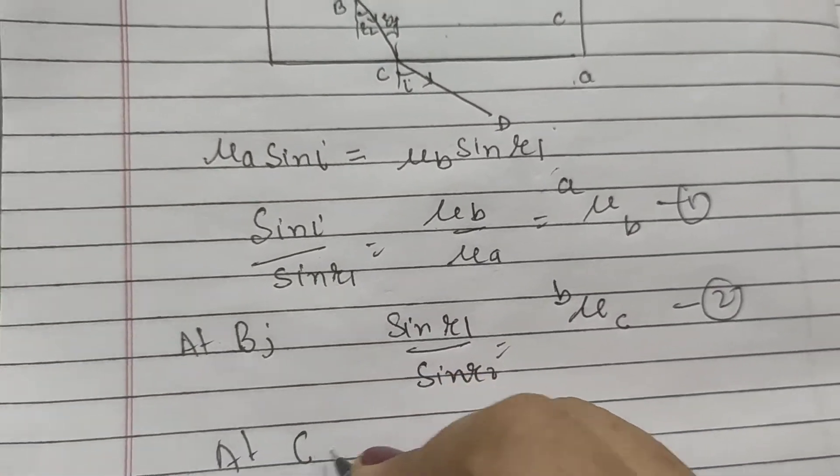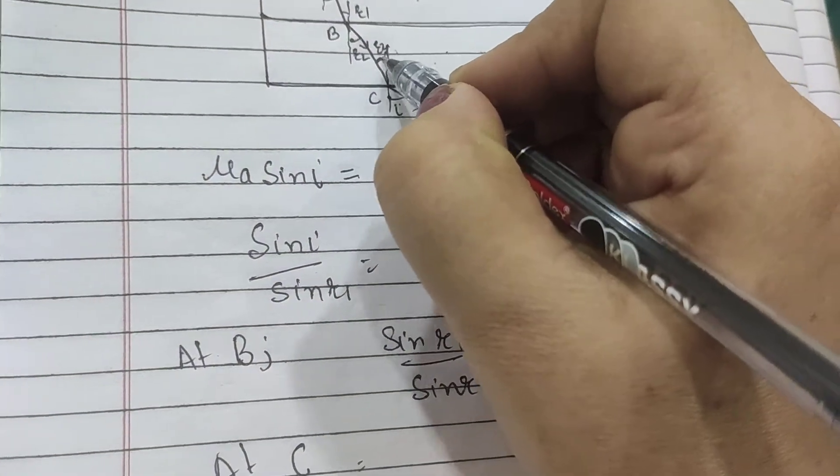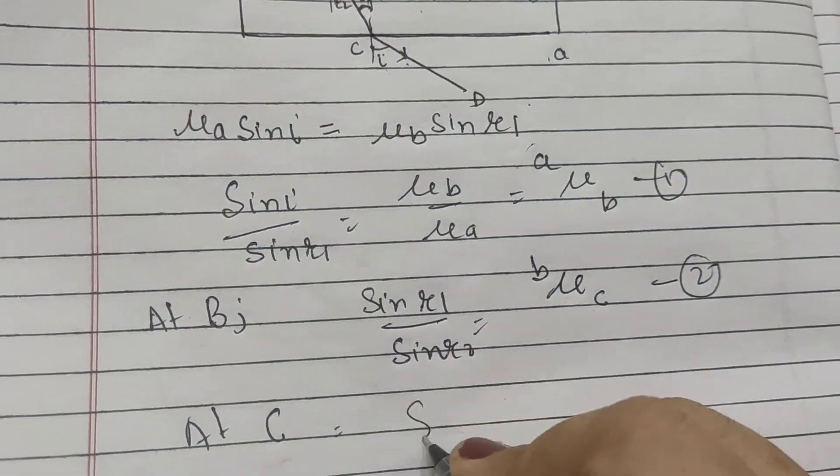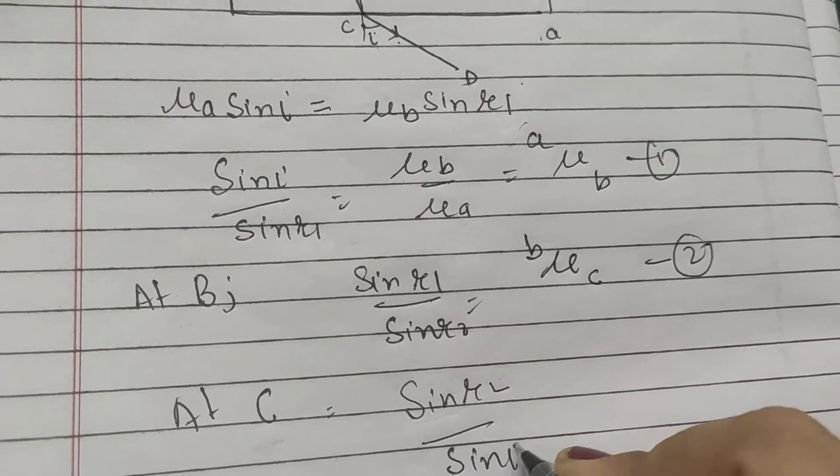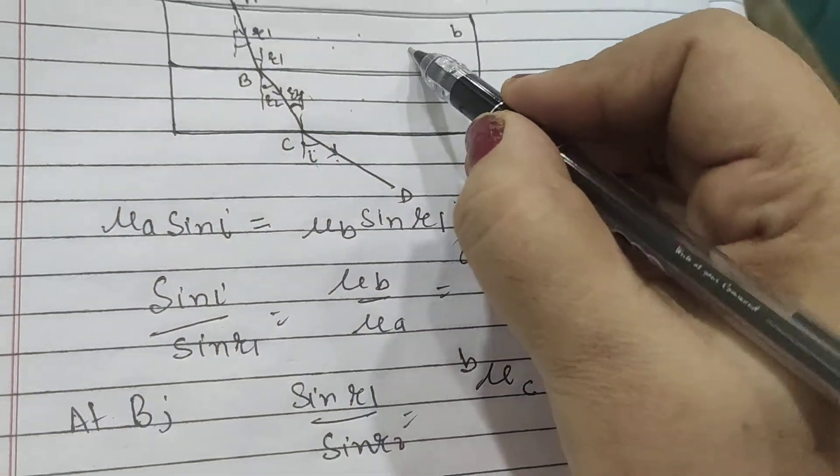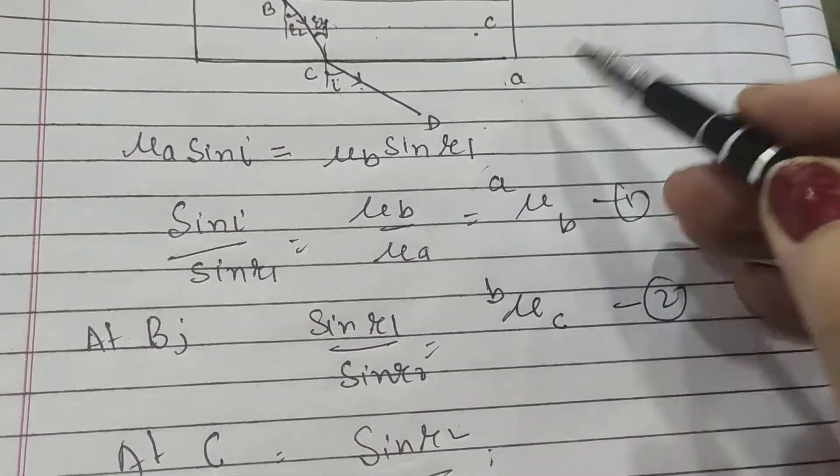At C point we will be having angle R2: sine R2 by sine I. Light is entering from C to A, so that will be mu C A. This is number 3.